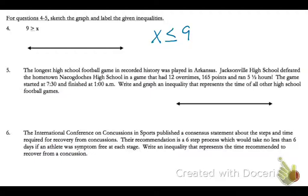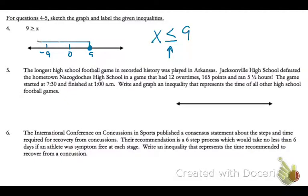I'm going to make sure I have 9 on my number line. I'll put a 0 mark, then a positive 9 and a negative 9 — just something to establish a scale. I'm going to put a solid mark at 9 because it can be equal to, and then the shaded area represents x, so it needs to be less than or equal to 9. I'll shade everything to the left — this is everything that is less than or equal to 9.